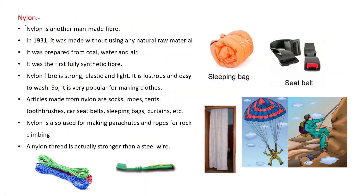The next synthetic fiber is nylon. Nylon is another man-made fiber. In 1931, it was made without using any natural raw material. It was prepared from coal, water, and air — from coal, some chemicals were obtained and these chemicals were converted into nylon. That is why nylon was the first fully synthetic fiber.